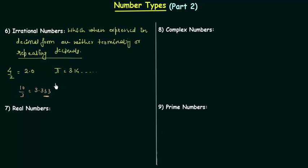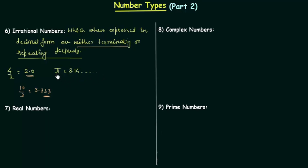In the case of irrational numbers, we have numbers which are neither terminating nor repeating. 4/2 is a case of termination and 10/3 is a case of repetition. But pi, which equals 3.14 and so on, is neither terminating nor repeating — that's why pi is an irrational number and those two are rational numbers.